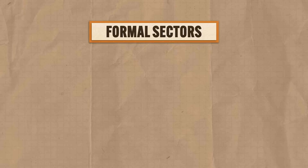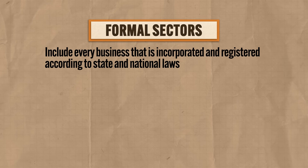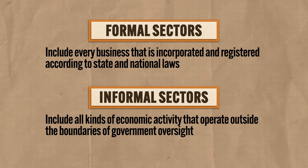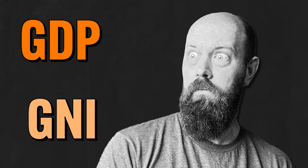No matter which sector is primarily present in a country's economy, that economic measure can be further refined into both formal and informal sectors. Formal sectors include every business that is incorporated and registered according to state and national laws — for example, the Walmart down the road does business legally because it's registered with the state. Many countries also have significant informal sectors, which include all kinds of economic activity that operate outside the boundaries of government oversight, like undocumented migrant workers or getting paid in cash for babysitting. Those measures only take into account the formal sectors, so informal sectors undermine the accuracy of measures like GDP or GNI.